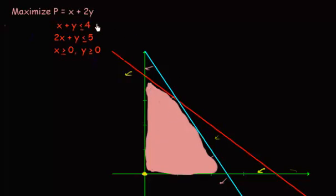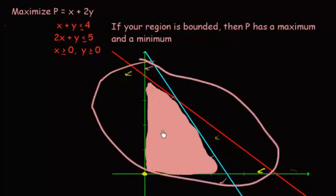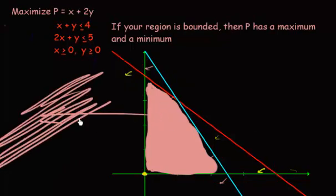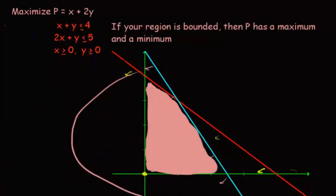Now that we've shaded it in, the next step in the corner point theorem was that if there's going to be a solution, then it has to be at one of the corners. I didn't mention this, so I guess it's a good enough point as any. If your region is bounded, then P has a maximum and a minimum. You're not always guaranteed a max or min. You are definitely guaranteed a max or min when your solution set is bounded. Bounded means that your region is not shading out forever. If I were to shade all of this out here, that's not bounded. But, this is bounded.